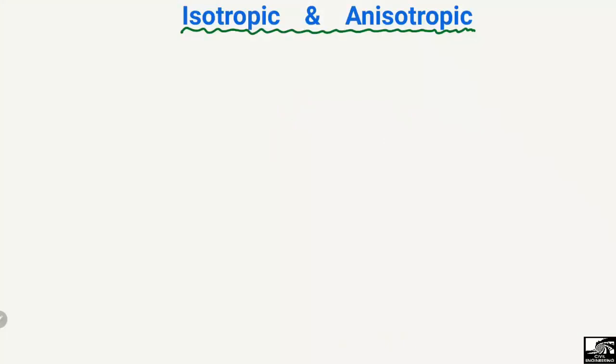Hello guys, welcome back to the Civil Engineering YouTube channel. Please subscribe to our channel for civil engineering videos. In today's lecture, we are going to differentiate between two types of materials: isotropic and anisotropic materials. First I will define them and then explain with the help of examples and figures.